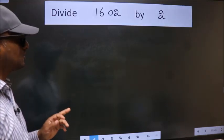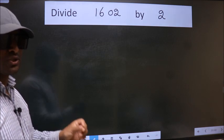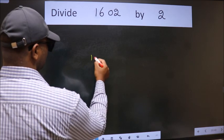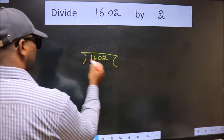Divide 1602 by 2. To do this division, we should frame it in this way. 1602 here, 2 here.